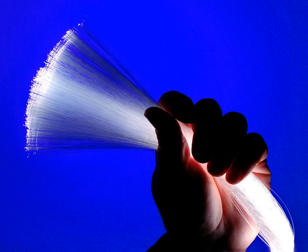It is often necessary to align an optical fiber with another optical fiber, or with an optoelectronic device such as a light-emitting diode, a laser diode, or a modulator. This can involve either carefully aligning the fiber and placing it in contact with the device, or can use a lens to allow coupling over an air gap. Typically the size of the fiber mode is much larger than the size of the mode in a laser diode or a silicon optical chip. In this case, a tapered or lensed fiber is used to match the fiber mode field distribution to that of the other element. The lens on the end of the fiber can be formed using polishing, laser cutting or fusion splicing.